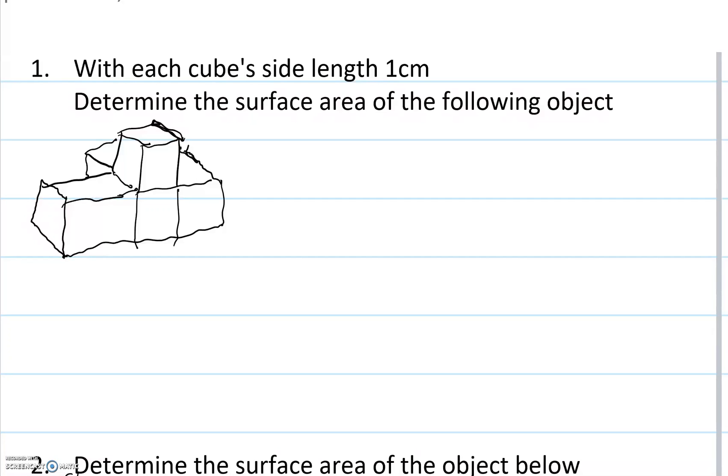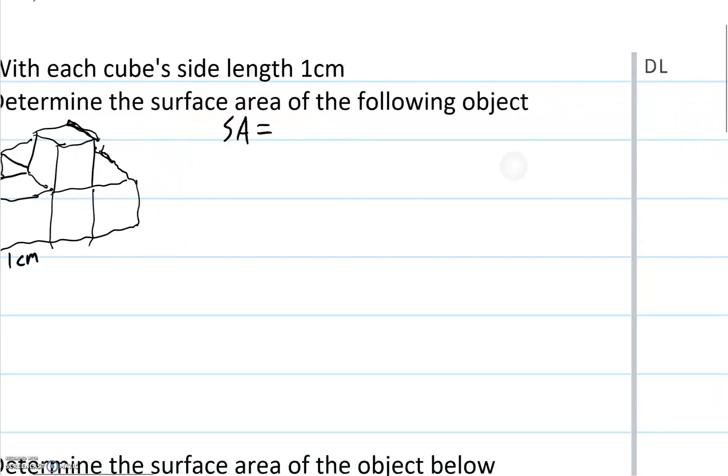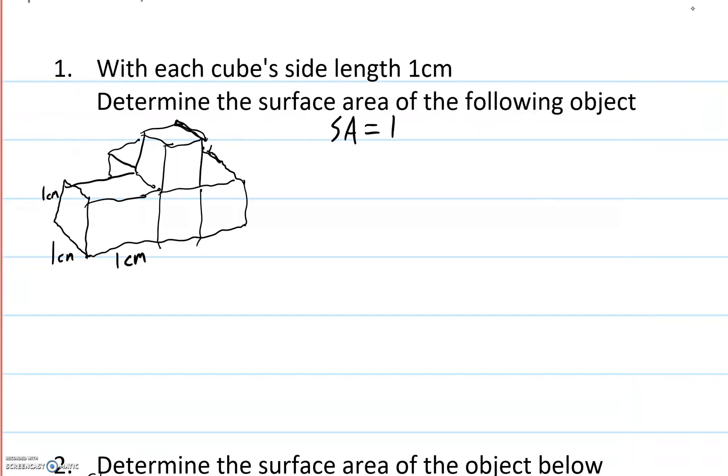I'm going to read this question and then we're going to go into it. With each cube's side length being 1cm, determine the surface area of the following object. Now what's really nice is that if each side length is 1cm by 1cm by 1cm, that means the area is equal to 1cm times 1cm, which is 1cm squared.